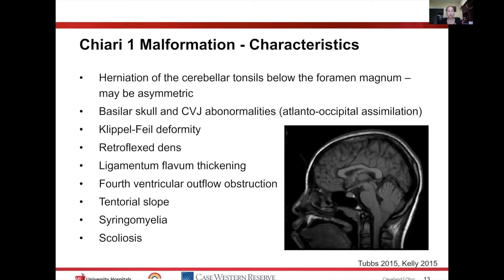Some of these patients will have retroflexion of the dens. You can also see ligamentum flavum thickening, fourth ventricle outflow obstruction, and variation in the tentorial slope — which likely has some component related to this being generally a posterior fossa volume issue. Associated syringomyelia can occur, and subsequent to that, associated scoliosis.